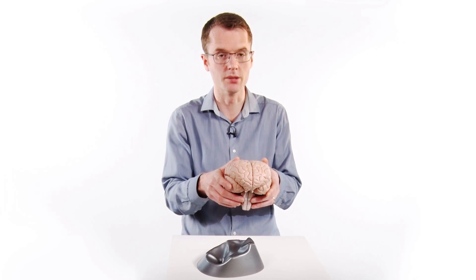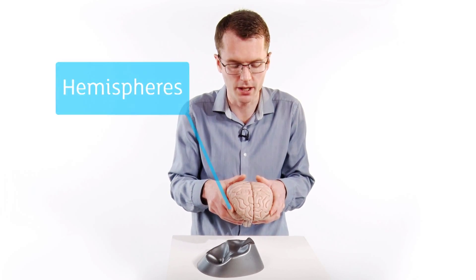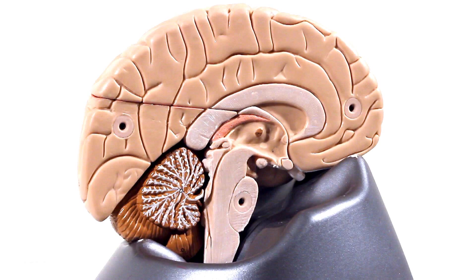Now let's have a look inside the brain. So we have two halves to the brain. They're called hemispheres. And let's have a look inside the left hemisphere.